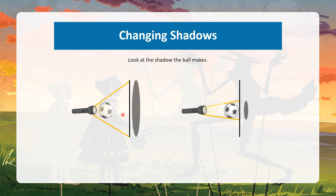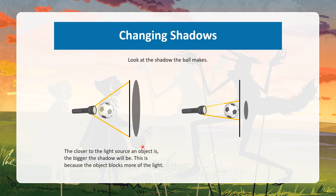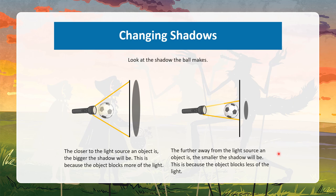The same applies to a ball — if the ball is near to the torch, the shadow formed is bigger in size. When it is further away, the shadow formed is smaller in size. The closer the object is to the light source, the bigger the shadow, because the object blocks more of the light. The further away the object is from the light source, the smaller the shadow, because the object blocks less of the light.